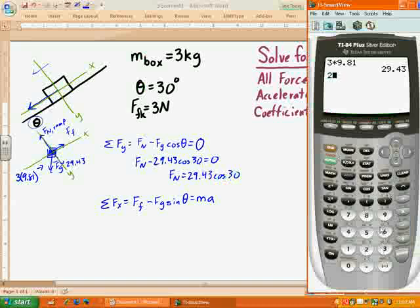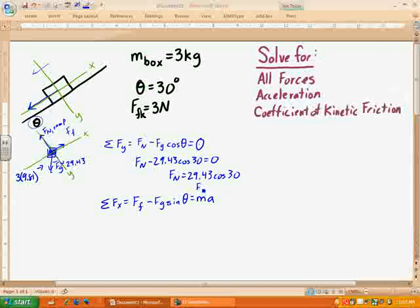So 29.43 cosine of 30, so it's 25.5. We're going to round it to 3 digits. So 25.5. So the normal force is 25.5 newtons. So we got that one. So we got normal force, we got force of gravity. All we got left is friction.